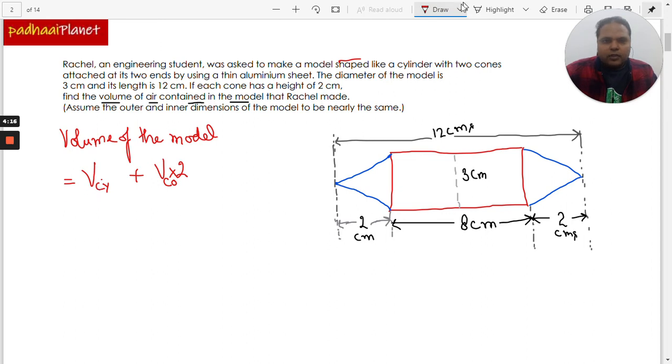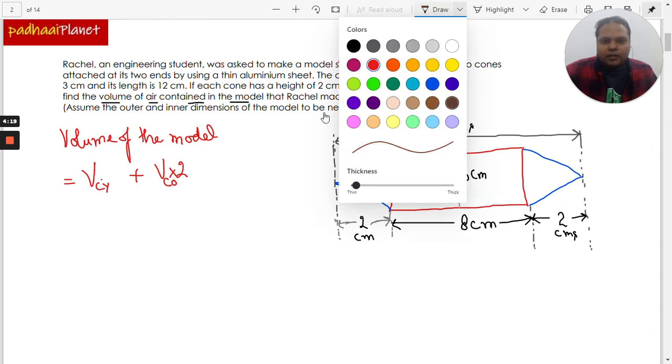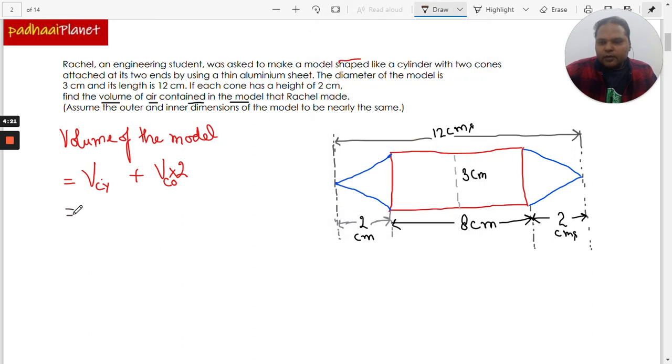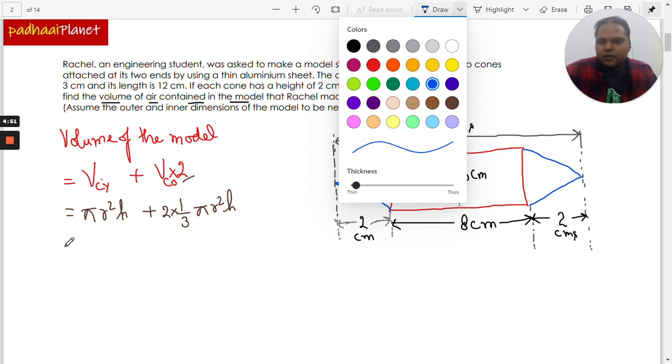So let's now start putting up the formula. Very simple question. Volume of the cylinder, the formula is πr²h. The formula of the cone is 1/3 πr²h, and since we are talking about two cones, we will just multiply this by 2.